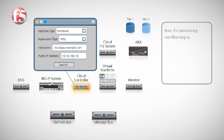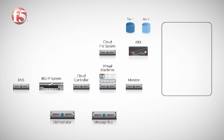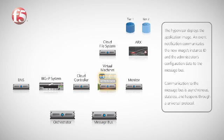Once the administrator submits the data, the provisioning workflow begins. The cloud controller tells the hypervisor to deploy the requested application image. At the same time, the cloud controller publishes an event notification, which is sent to the message bus. The notification contains the new application image's instance ID and the data entered by the server administrator. All communication to the message bus is asynchronous and stateless, and happens through a universally available protocol, such as syslog.